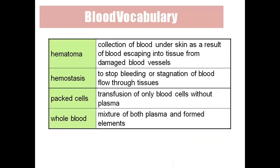Hematoma means blood collected under the skin. If something hits us, after some time a blackened area appears on the skin — that is a blood clot under the skin. Hemostasis and blood clot mean the same thing. In packed cells, only the cells are separated and transferred to another person. In whole blood transfusion, both plasma and blood cells are transfused together.